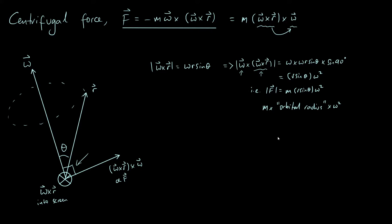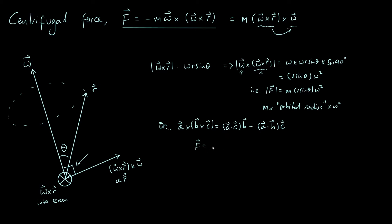I also want to talk about an alternative way to see this using a useful vector identity. The identity is: any vector a crossed with b cross c equals a dotted with c times the b vector, minus a dotted with b times the c vector. We can apply this here because our centrifugal force is exactly of this form — a crossed with b cross c — where our a and b vectors are both omega and our c vector is r.